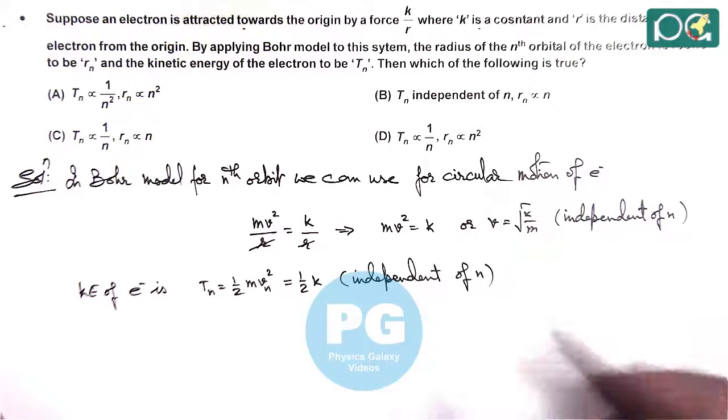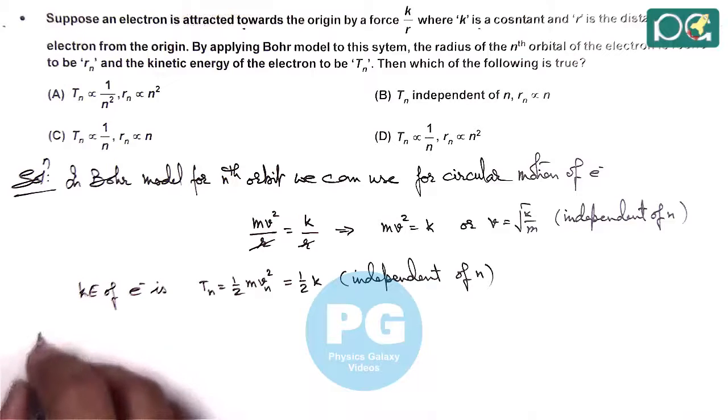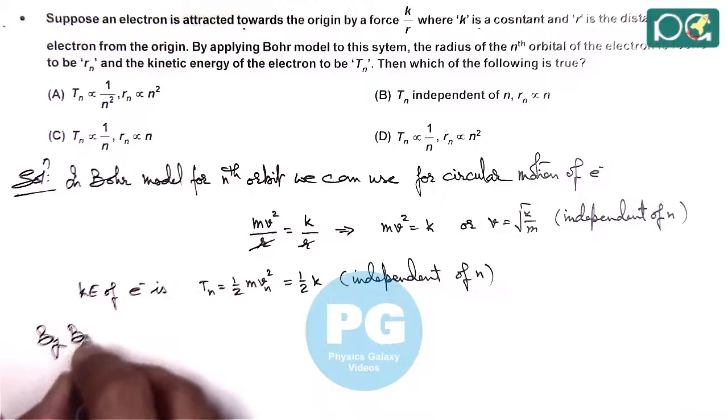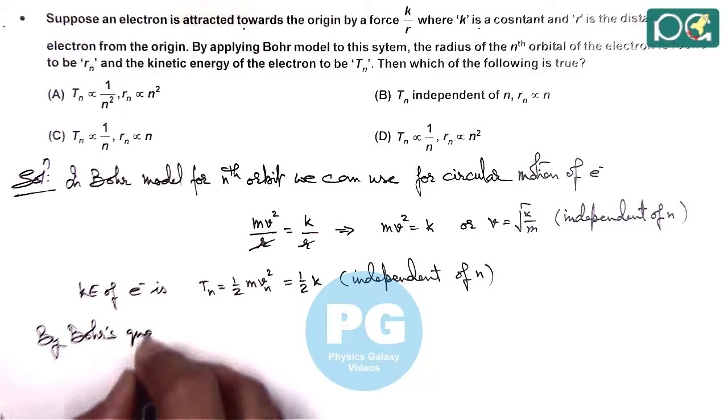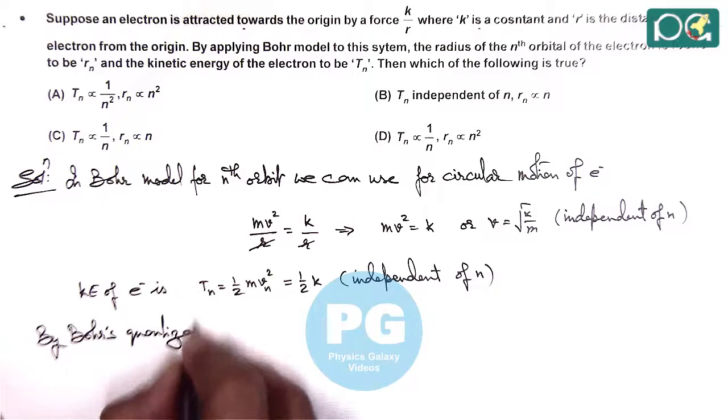Whereas we need to check for rn, then also we can do by Bohr's quantization postulate.